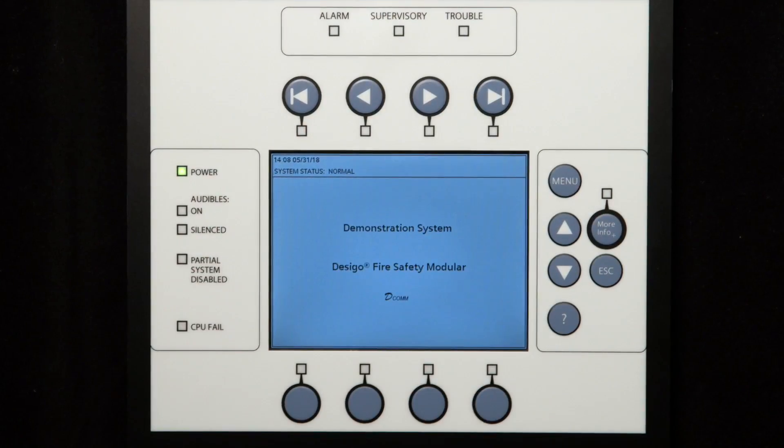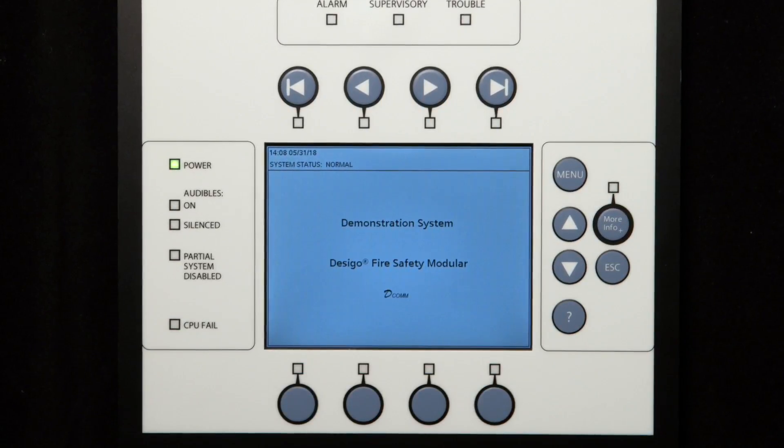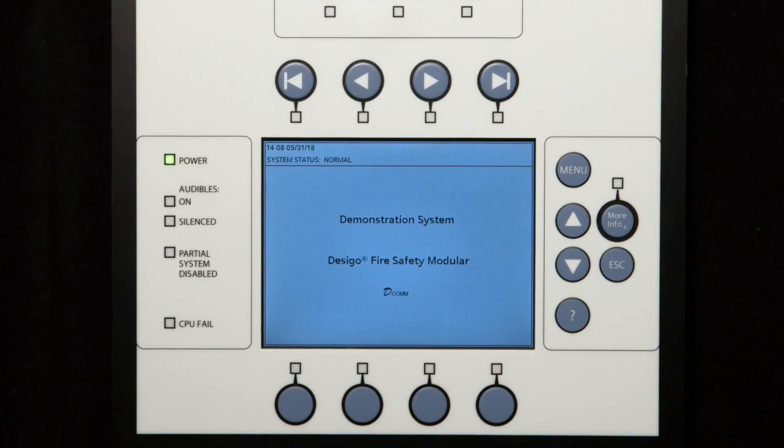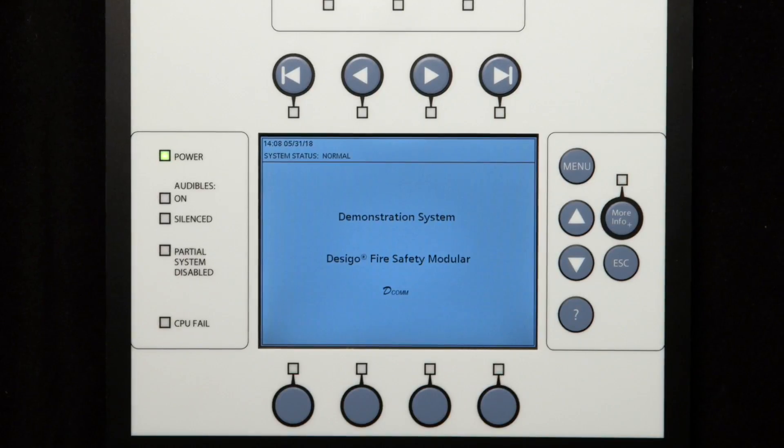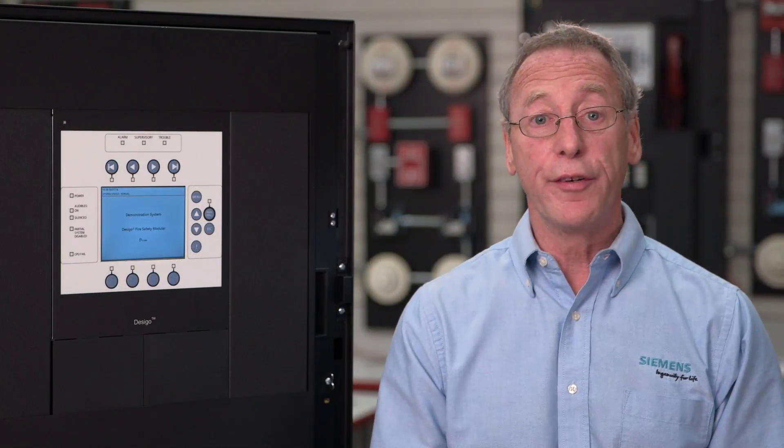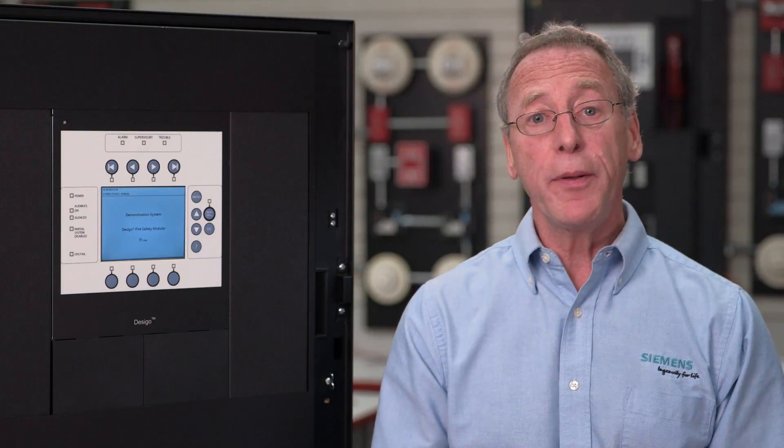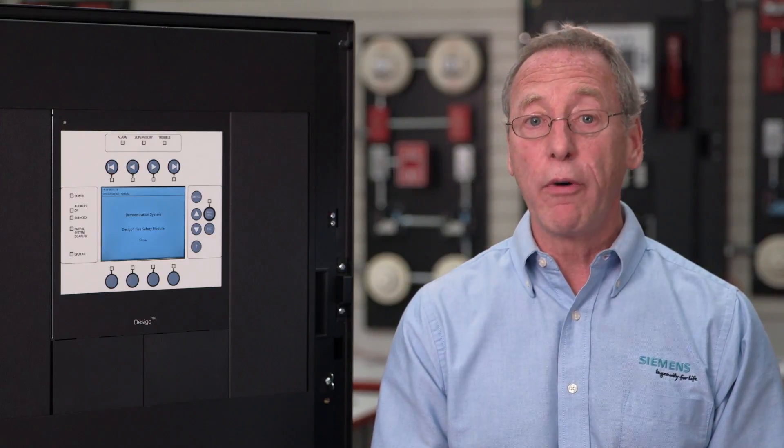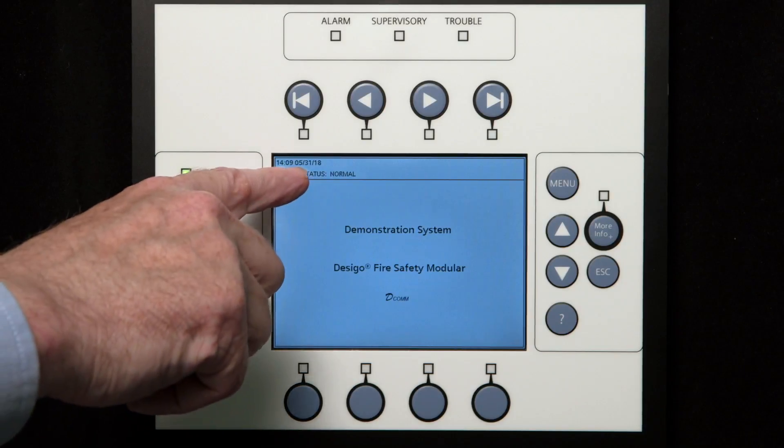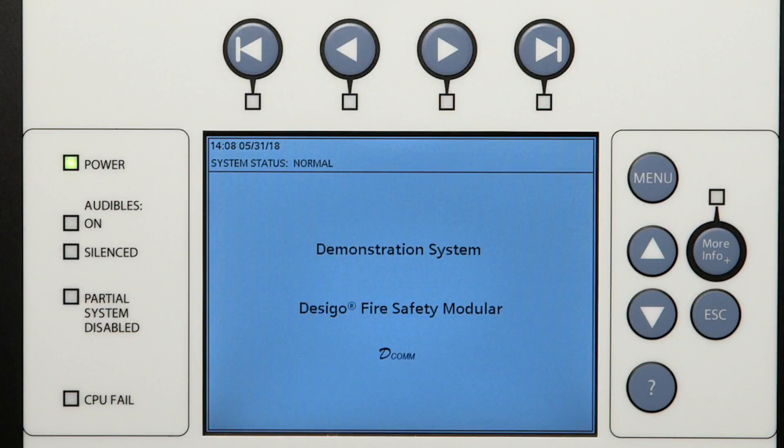First, we have the LCD display in the center of the operator's interface. This is where you can view everything related to the operation of your fire alarm system. The display provides system status updates in real time, current events such as alarms, and displays all menu selections which we will review later on. In normal standby mode, the display will indicate system status normal with the current date and time, as well as other location-specific messages.